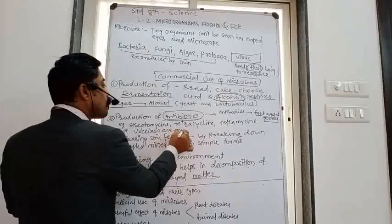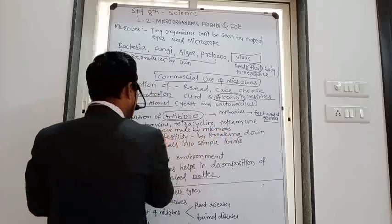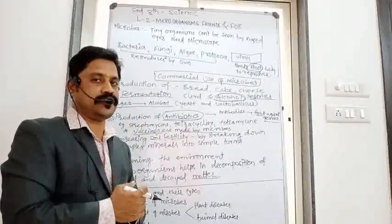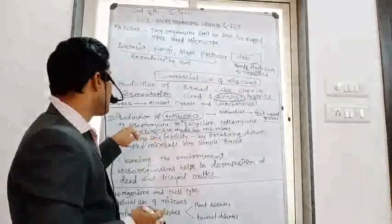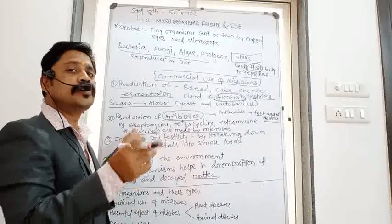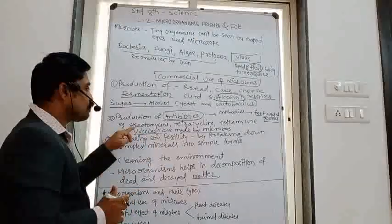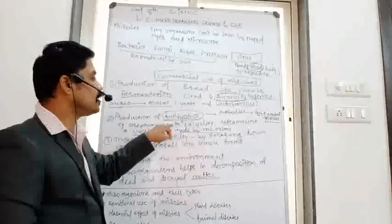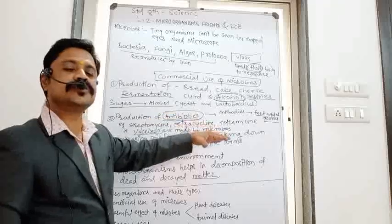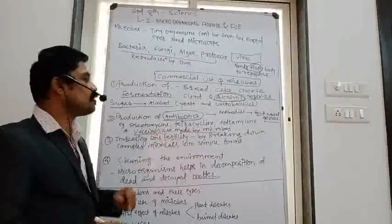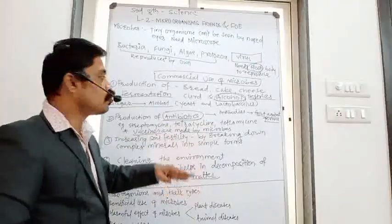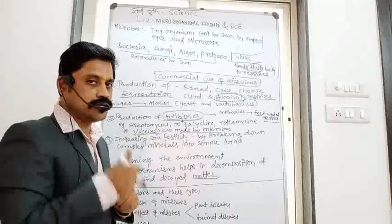Some vaccines are also made by microbes, which we will learn in detail later. The examples of antibiotics are very important — they are asked in exams every time. The three key examples of antibiotics are: streptomycin, tetracycline, and teramycin. There are other antibiotics as well, but these are the primary examples to learn.